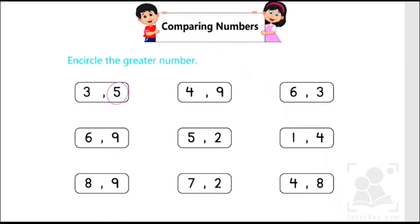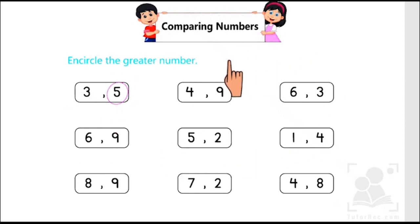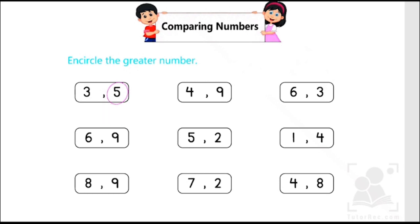This exercise is about encircling the greater number. As you can see, we have been given two different numbers in each box, in which we have to identify the greater number. The first box has been done for our ease. As you can see, there are two numbers, three and five, written here, and we have to encircle the greater one.